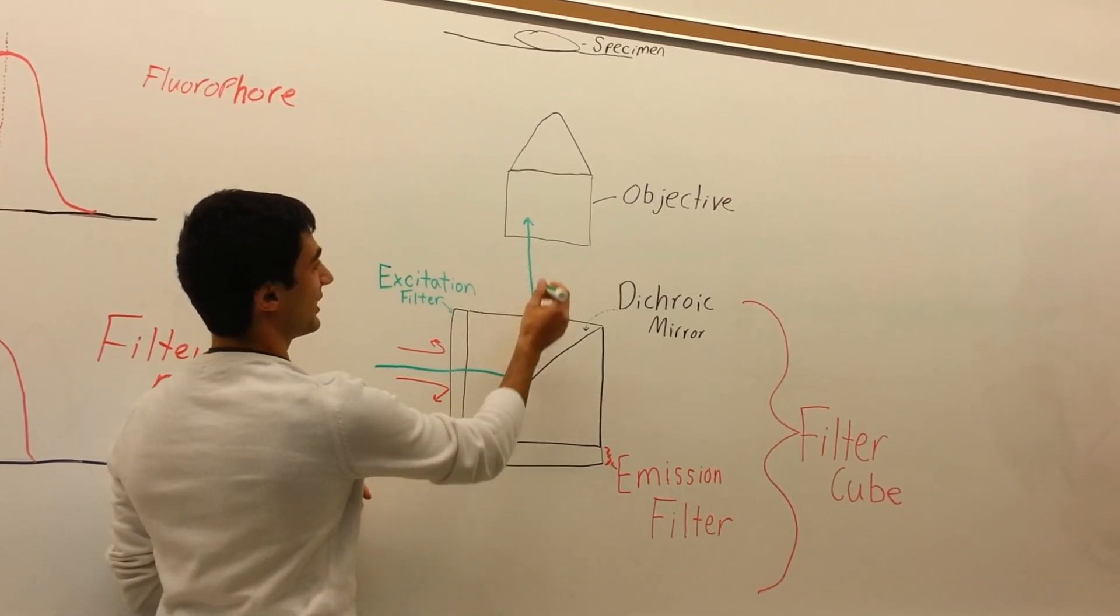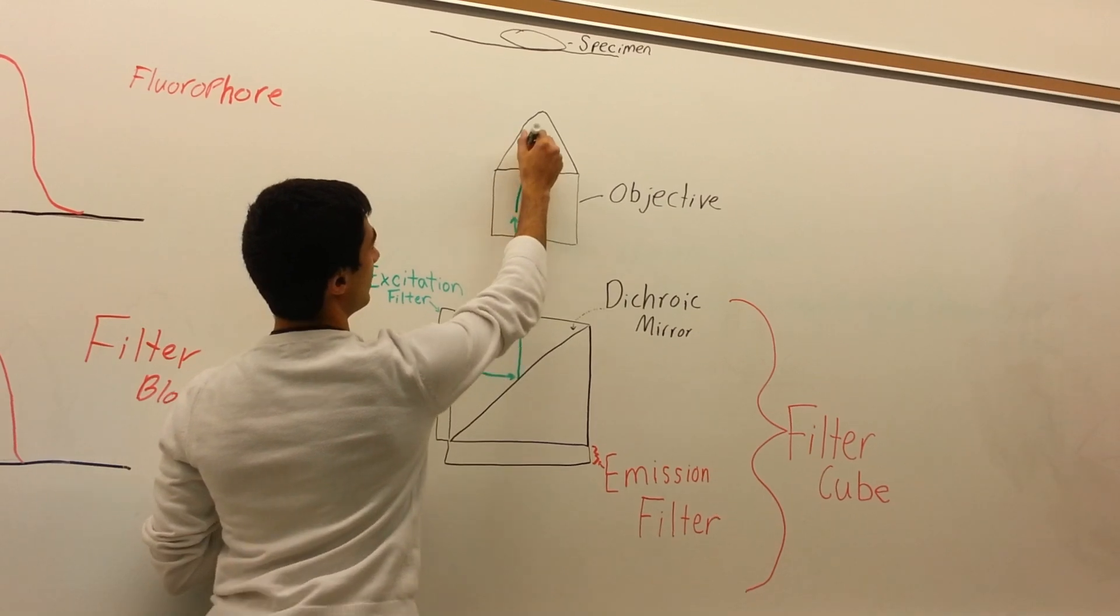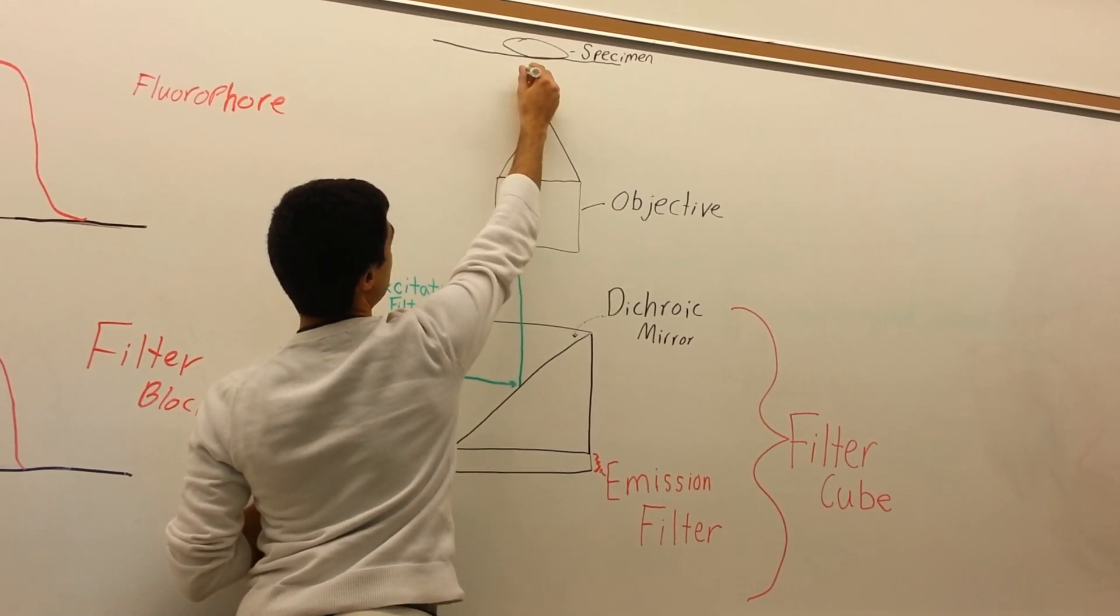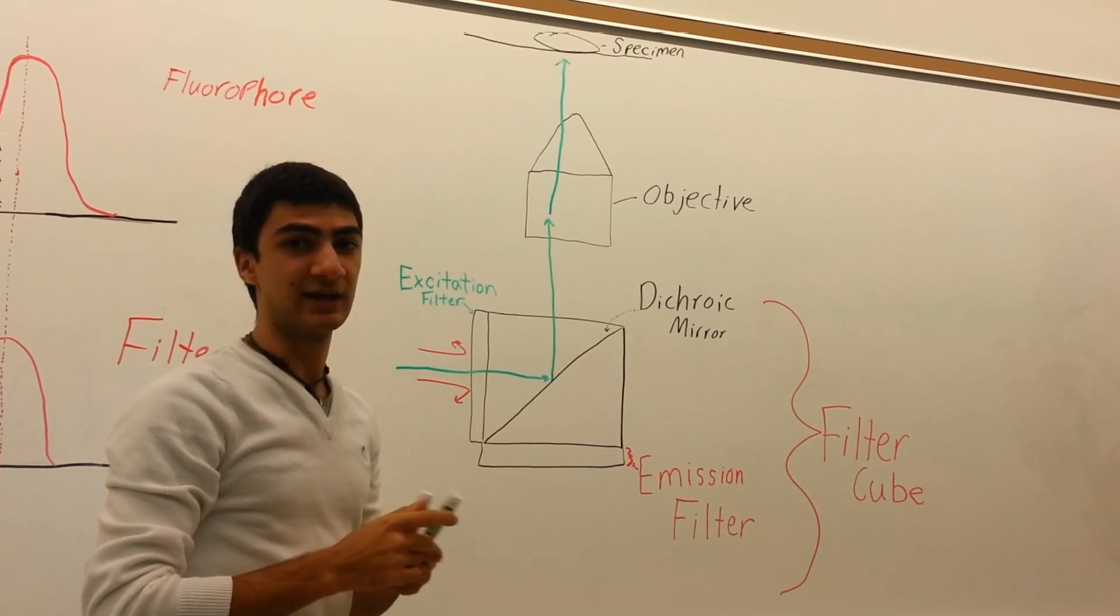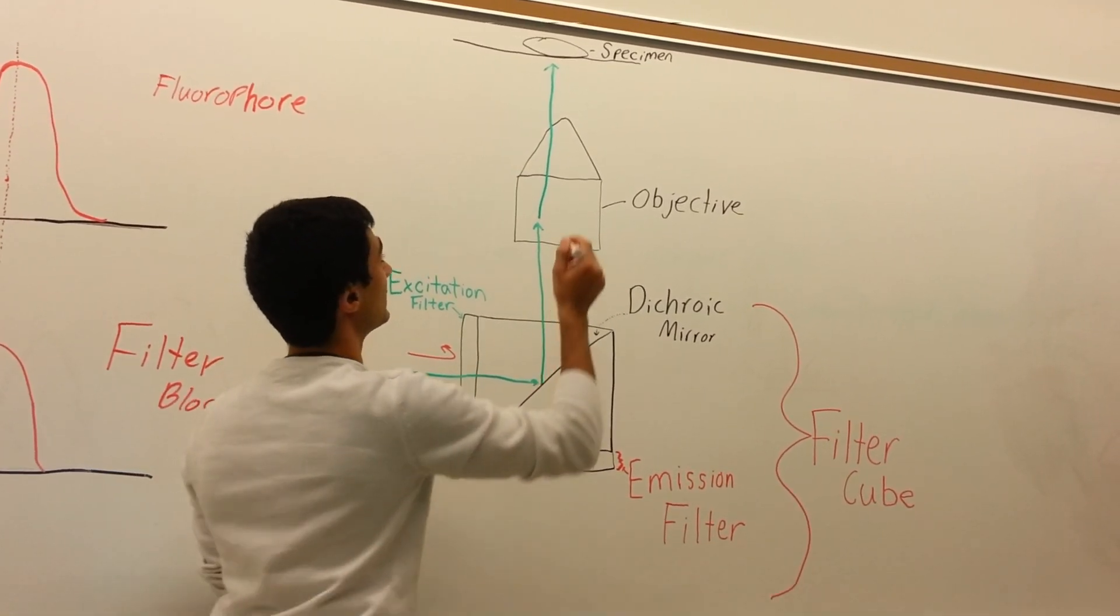Following this light path, it is going to go through the objective and then strike the specimen. There, it is going to be absorbed by the specimen, and as a result, it is going to emit light.